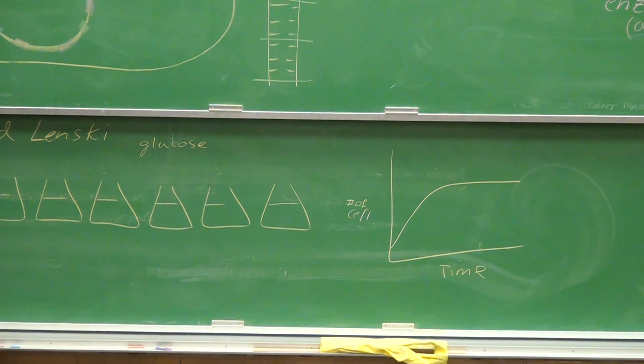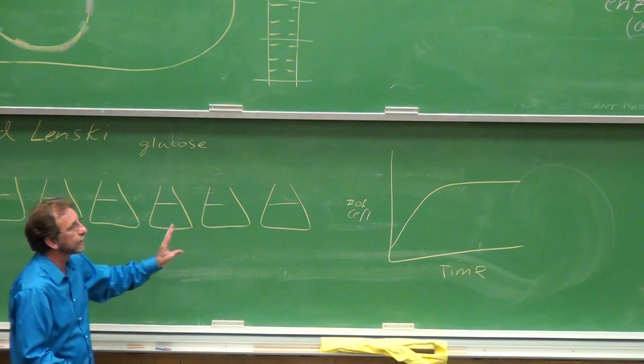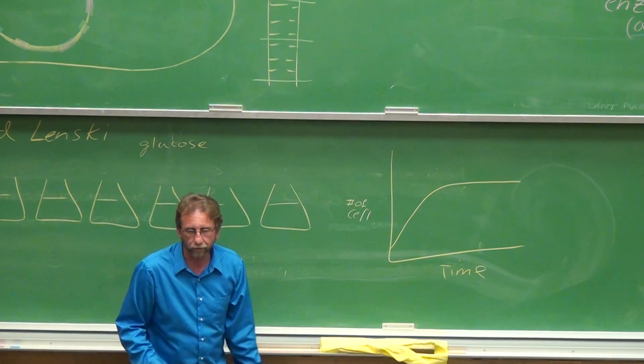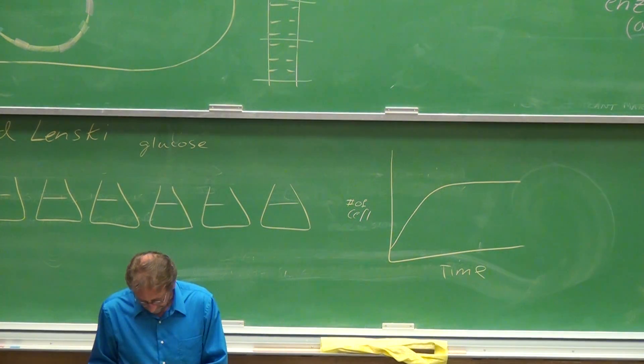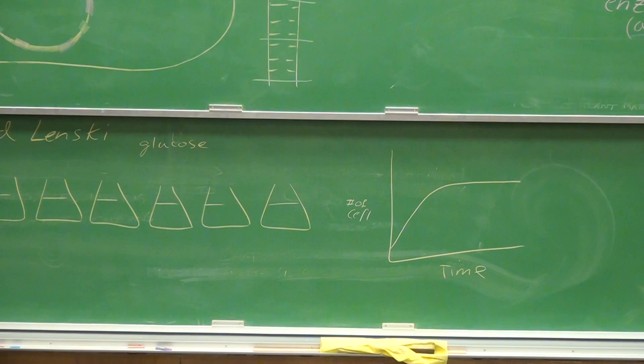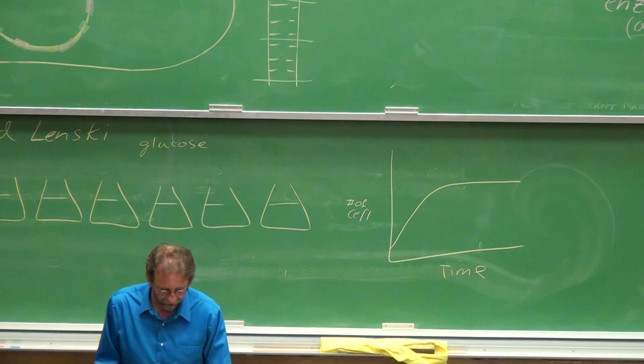But what he noticed was that the changes that took place were different changes in each of the 12 lines. He didn't see the same mutations leading to the same results. Different mutations led to the cells getting bigger. All 12 lines got better, more efficient at using the glucose that was in the environment.